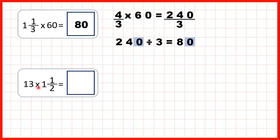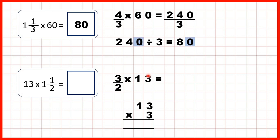Finally we have 13 times 1 and a half. We start by changing 1 and a half into an improper fraction: 1 times 2 is 2, plus 1 is 3, so that's 3 halves. We're multiplying by 13. I've switched the order and written 3 halves first, but remember with multiplication order doesn't matter. Now 3 times 13 — using column method: 3 times 3 is 9, 1 times 3 is 3, so that's 39.